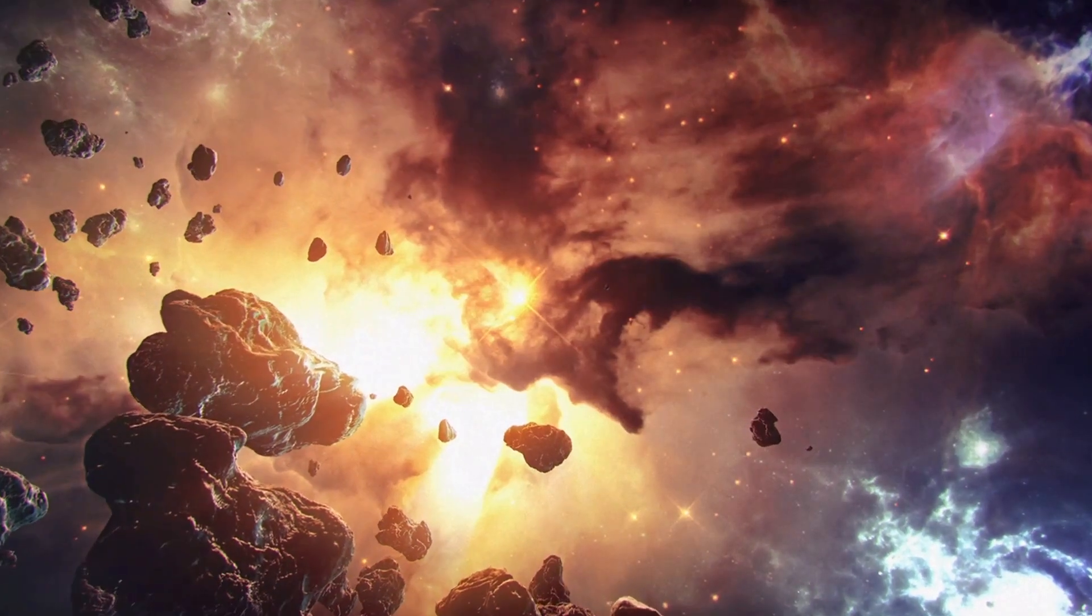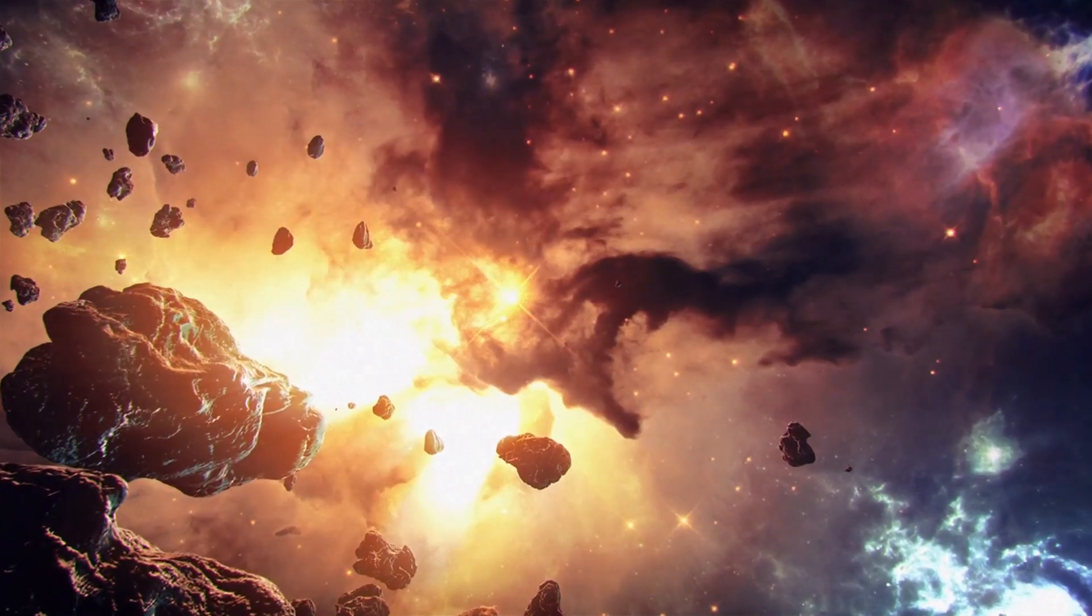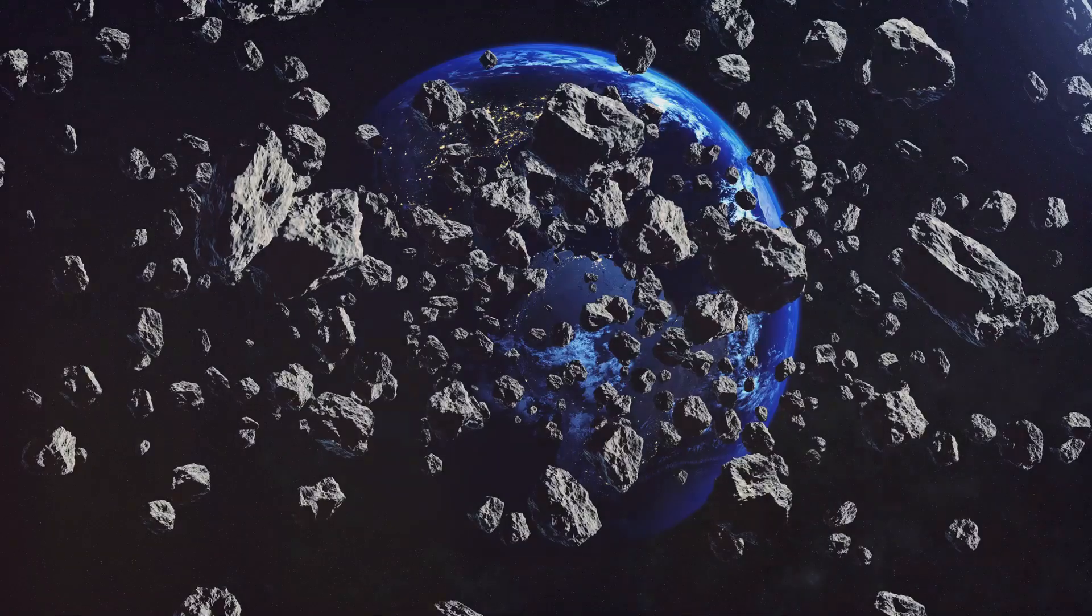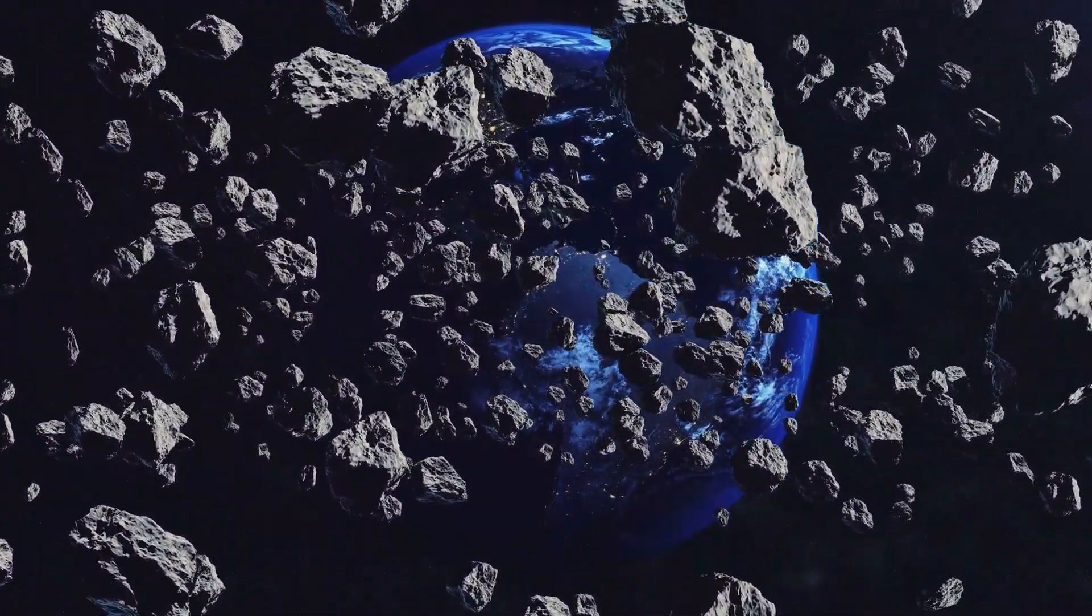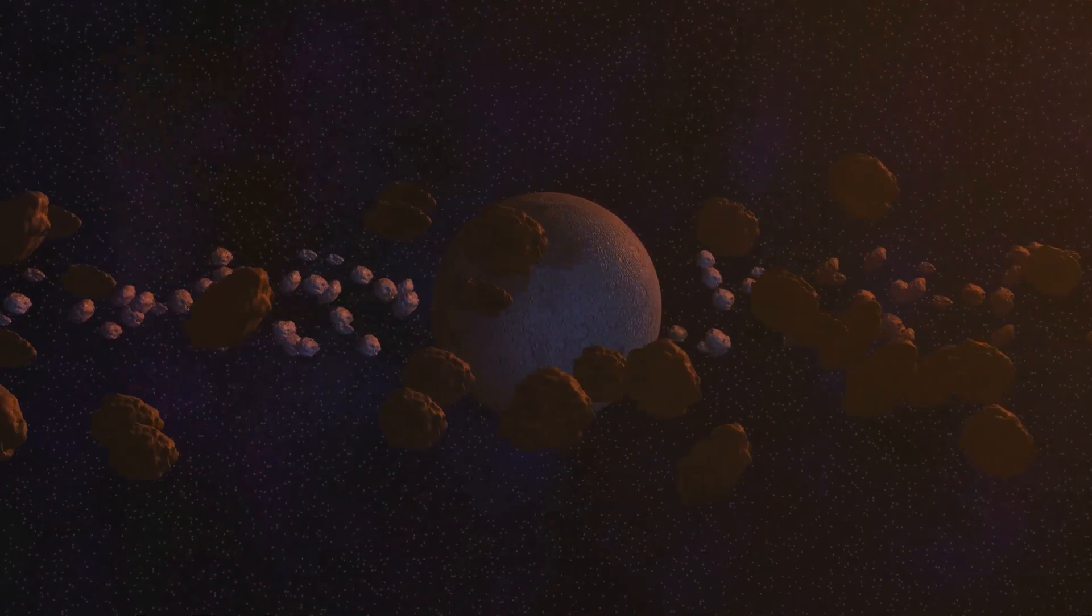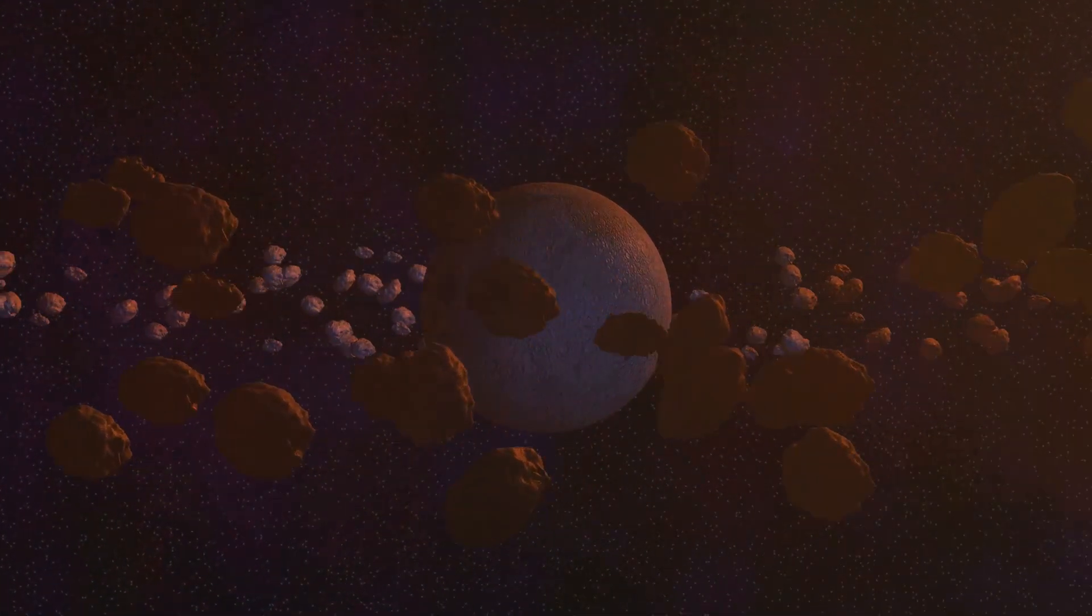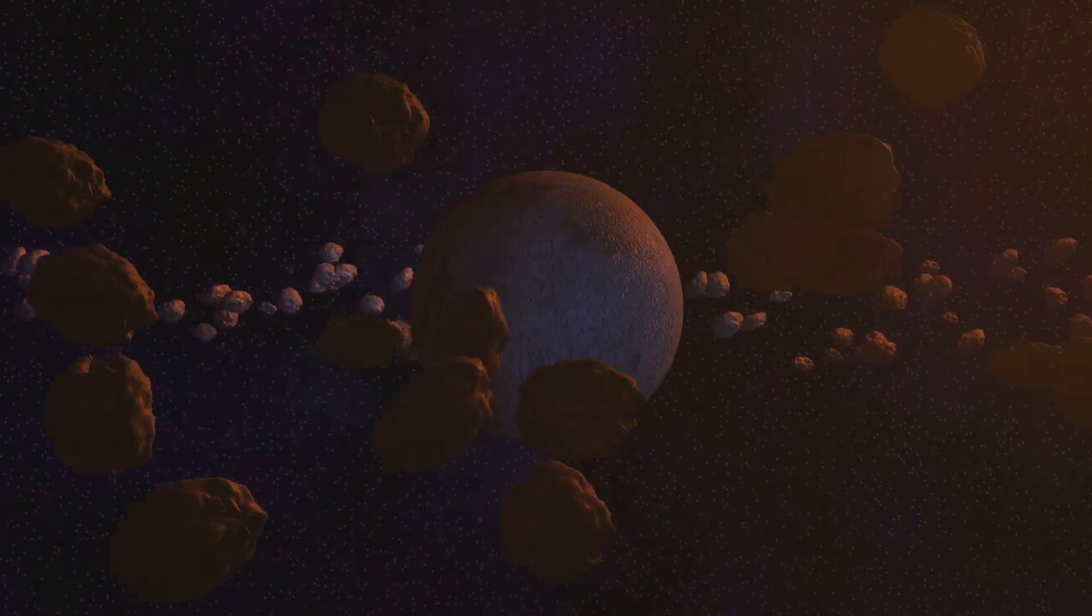Within this vast expanse, trillions of icy objects, remnants from the solar system's formation, are loosely bound by the sun's gravity. These objects have remained largely unchanged for billions of years. These objects, ranging in size from small pebbles to dwarf planets, are the building blocks of comets.